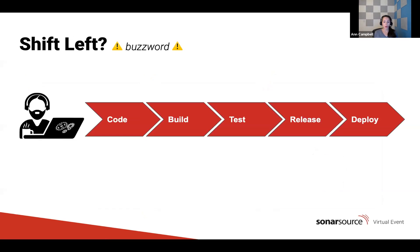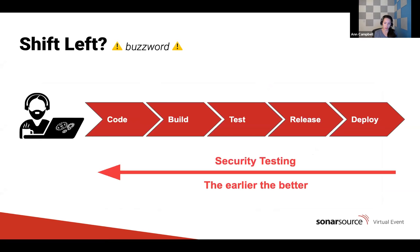What we have to offer here is — buzzword alert — shift left. Shift left is overused, but it's overused because there's a lot of real meaning and value here. Specifically in this context, what we mean is moving the security testing of the code as close to the developer who wrote the code as possible. Not three months after the code was written, not right before it goes into production when developers have completely forgotten about it. Instead, we raise issues as soon as possible after the code was written, while it's still fresh in mind, so it's cheaper, easier, and faster to fix.